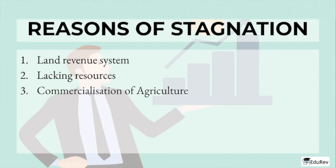Apart from the zamindari system, there were two more systems — namely the Ratwari and the Mahalvari system — which were very prevalent. The next reason was lacking of resources, meaning there was a lack of resources. The third reason was the commercialization of agriculture, which refers to the shift from cultivation for self-consumption to cultivation for sale in the market. Due to commercialization, there were some evidences of relatively high yield of cash crops in certain areas, but this could not help in improving the conditions of Indian farmers.